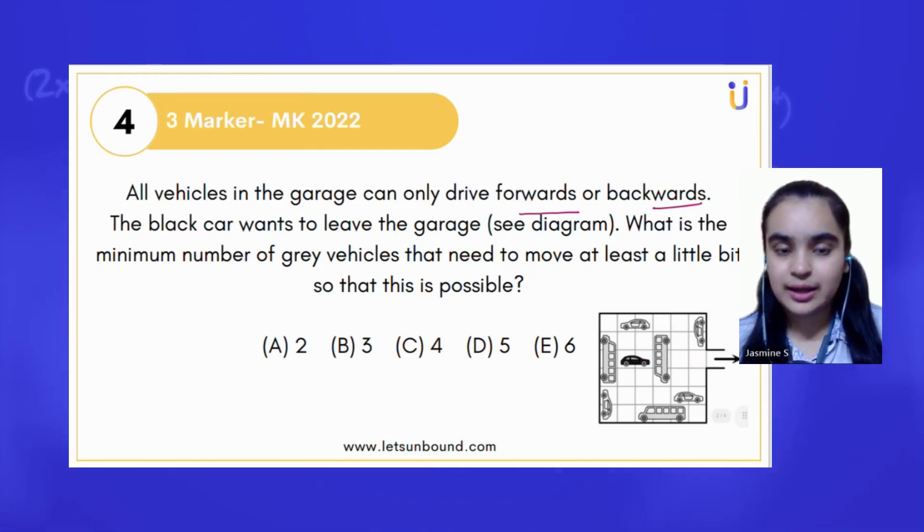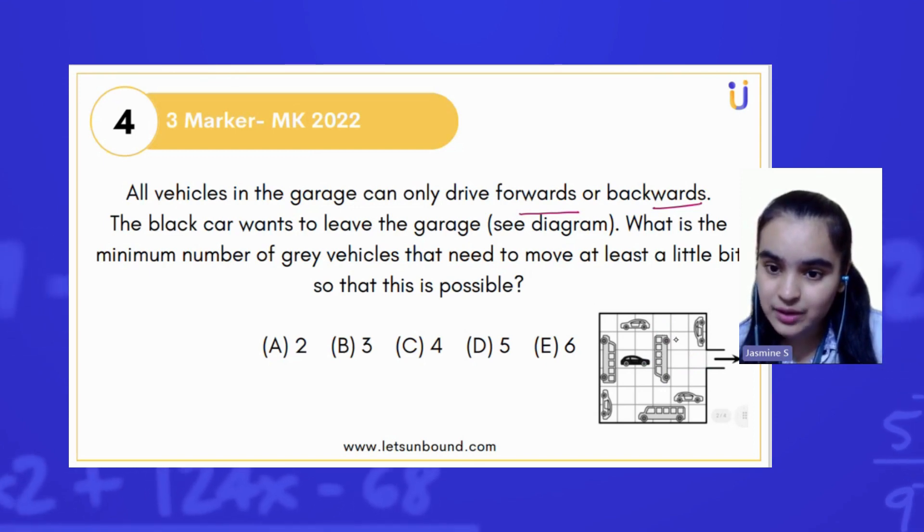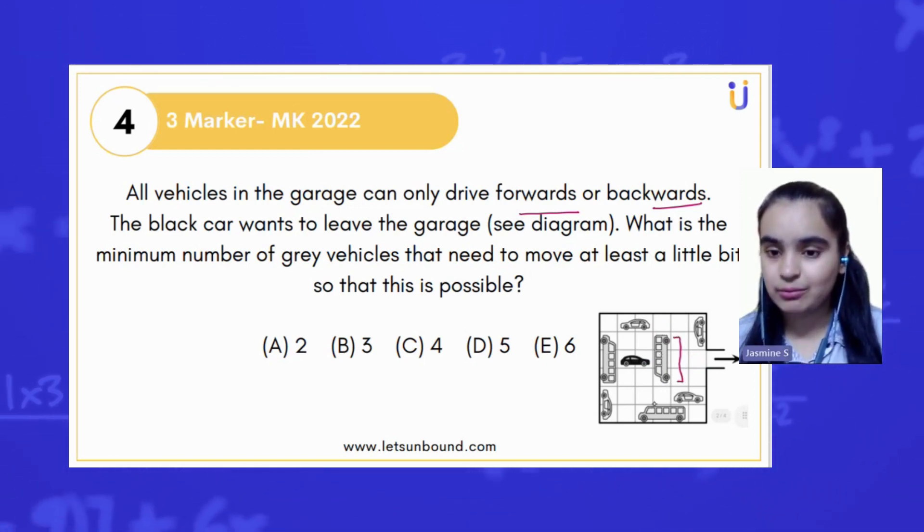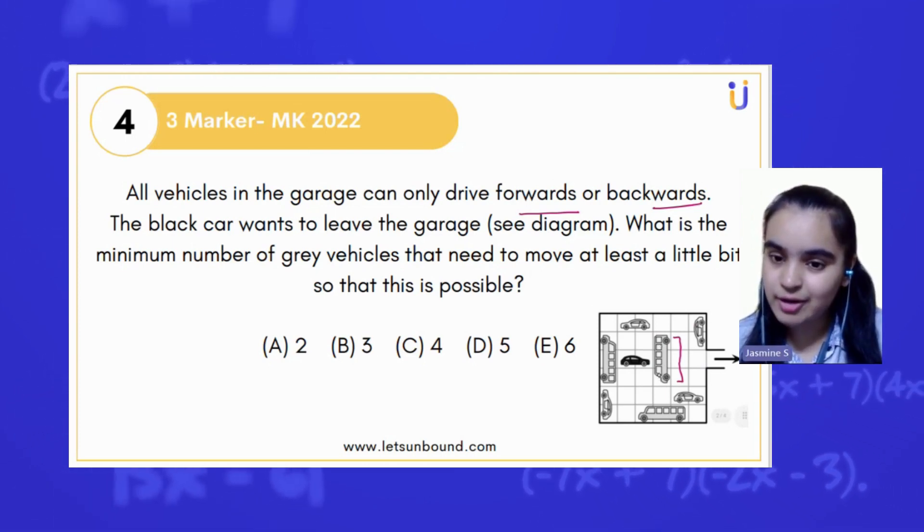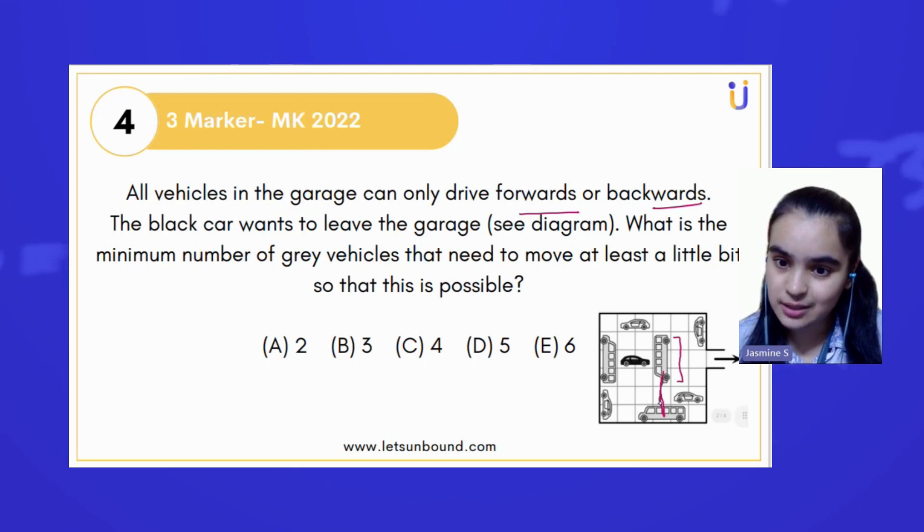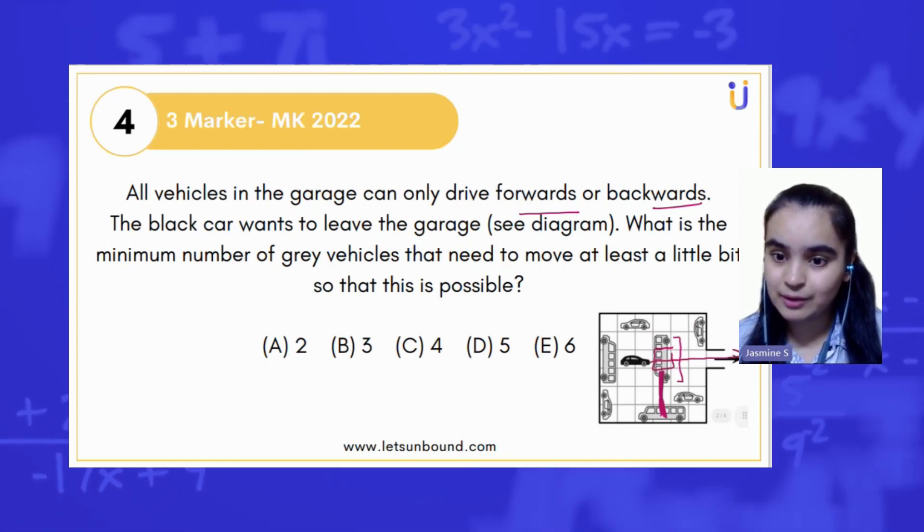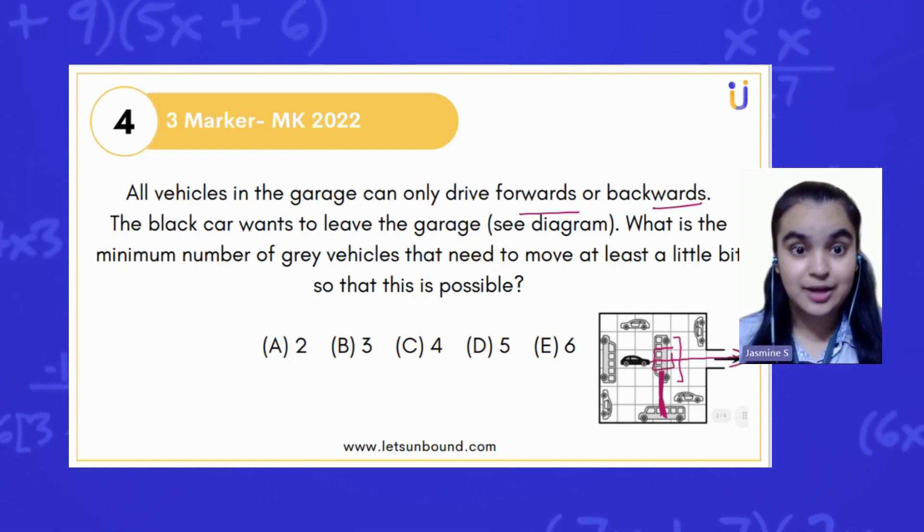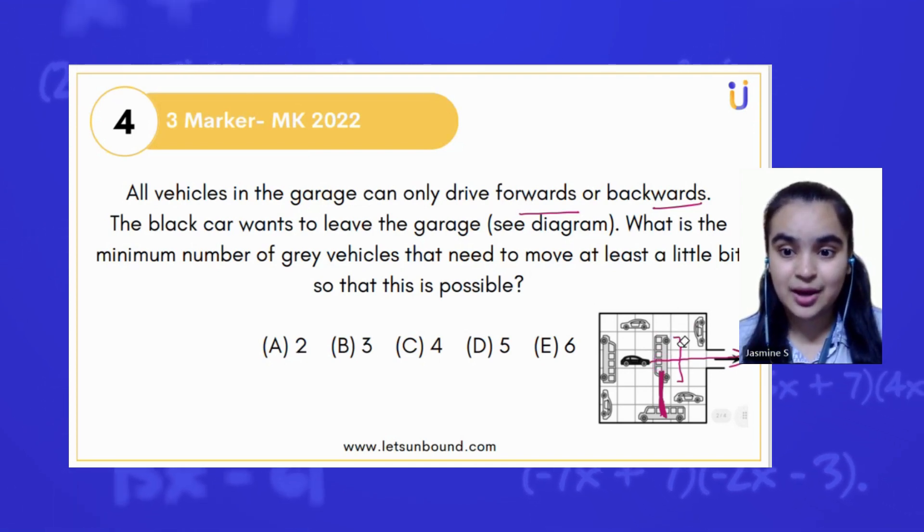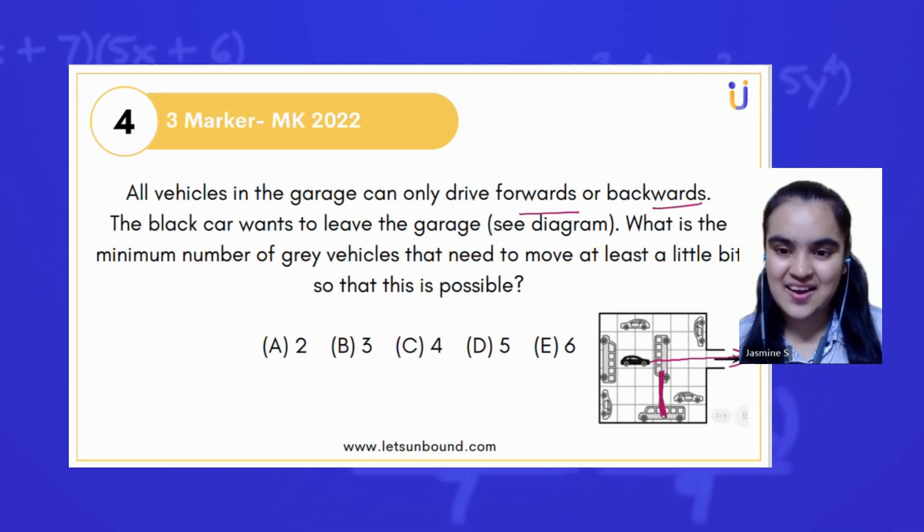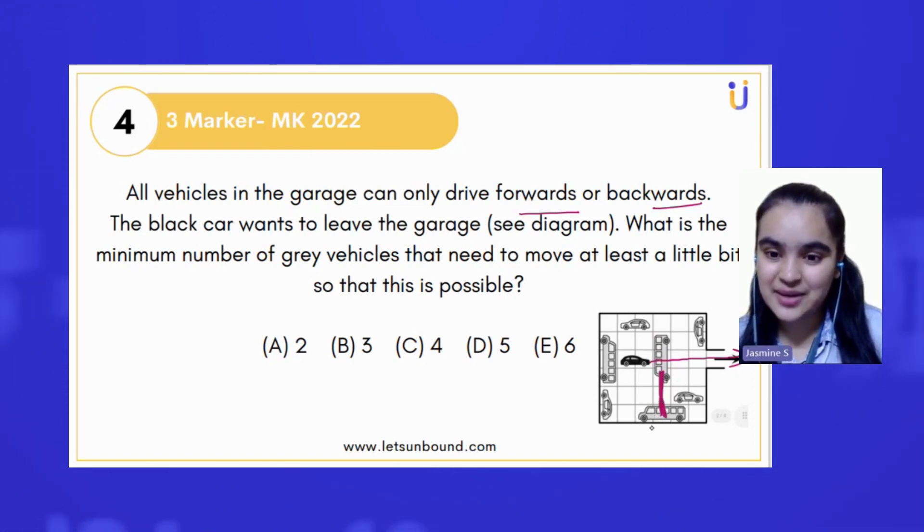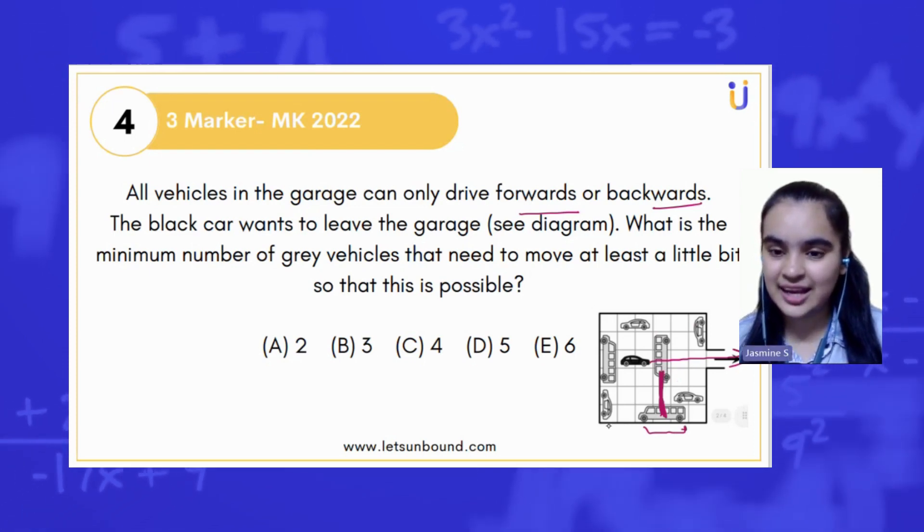Now, let's see if we can move this vehicle down. So if you can see, if we are going to move this vehicle down, it will consume these three boxes. And this place will be empty for the black car to move outside. We can do this, right? But we cannot crash the other car. Hence, we have to move this car ahead.